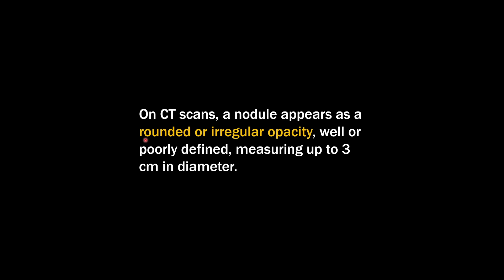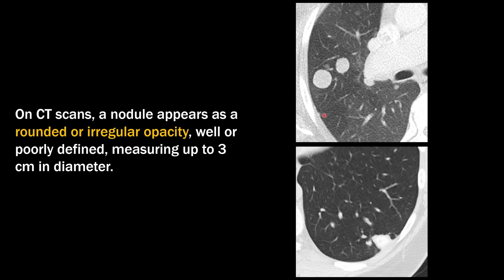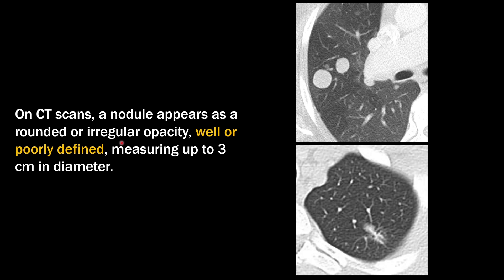Going back to our definition: a nodule appears as a rounded or irregular opacity — that refers to the shape. A nodule can be round or circular, or it can be irregular; both are considered nodules. An opacity in this context just means a focal area of increased lung density. The next part — well or poorly defined — refers to the margins or borders of the nodule. A well-defined nodule has clear margins you could easily outline with a pencil, whereas a poorly defined nodule has fuzzy borders. Both are still considered nodules.